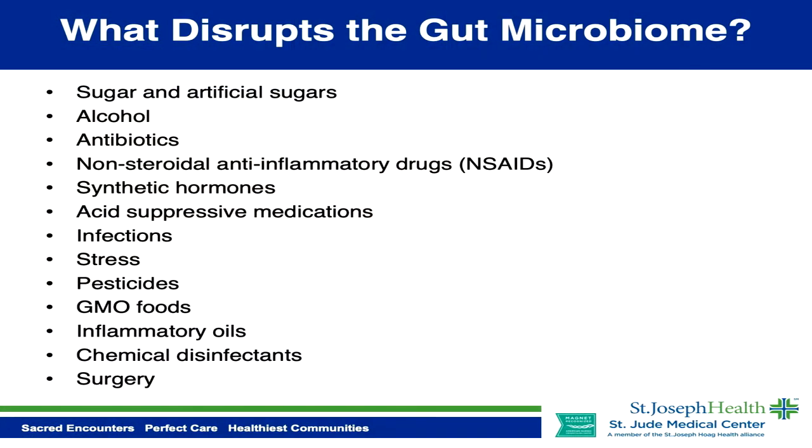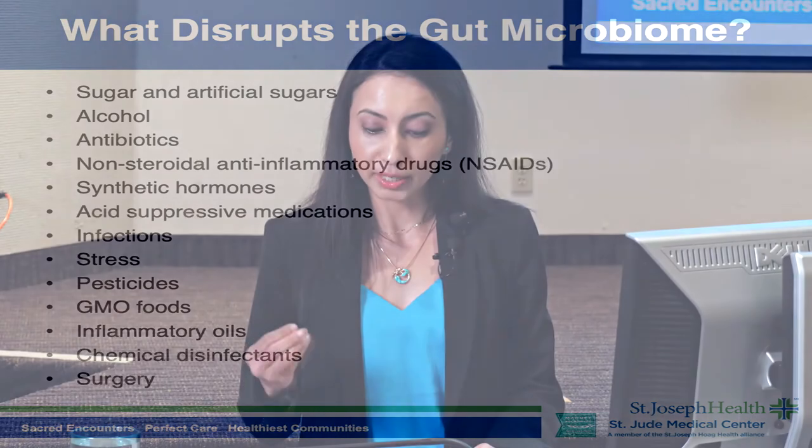Inflammatory oils — specifically vegetable oils like corn oil, soybean oil, and canola oil — can definitely cause inflammation in the gut. We see significant improvement when patients cut them out, including improvements in hormones; many women report their menstrual cramps improve significantly. We also see improvement in skin. Chemical disinfectants — soaps, detergents, cleaning chemicals, even mouthwashes — are also disruptors, which is why it's preferable to use more natural household cleaners like baking soda, vinegar, and essential oils whenever possible.